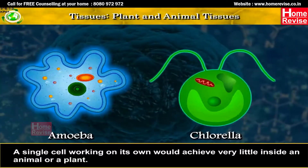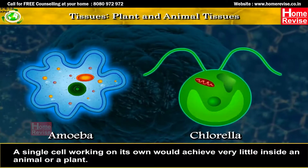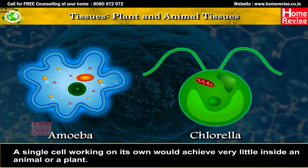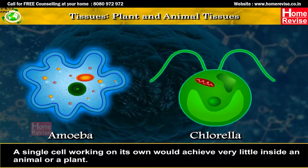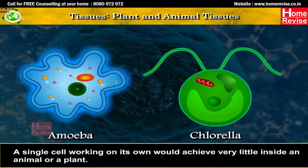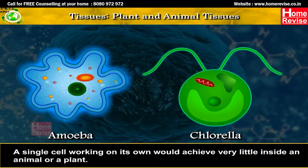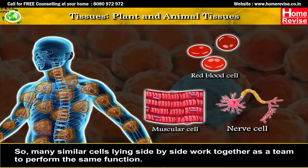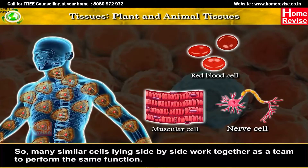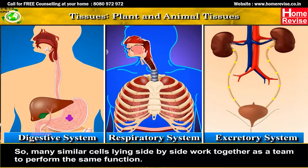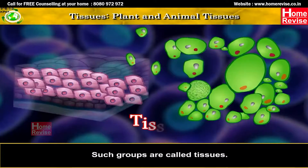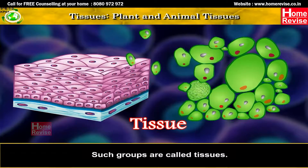A single cell working on its own would achieve very little inside an animal or a plant. So many similar cells lying side by side work together as a team to perform the same function. Such groups are called tissues.